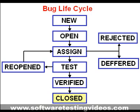Once the bug is fixed, it is tested by the tester. If the tester feels that the bug no longer exists in the software, he changes the status of the bug to closed. This state means that the bug is fixed, tested, and approved.